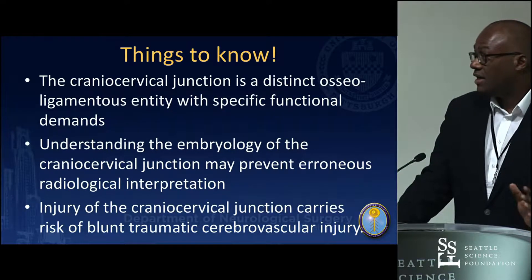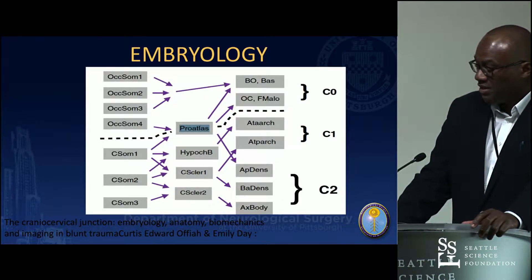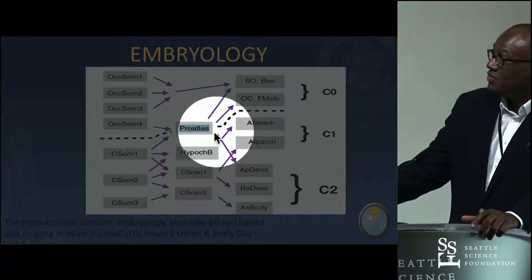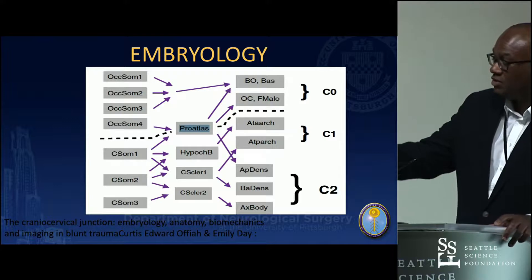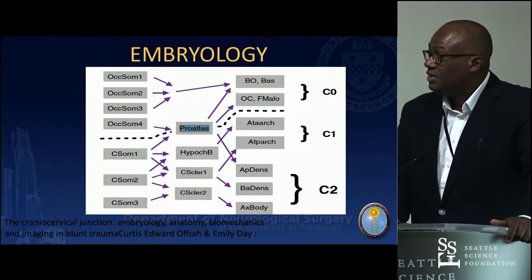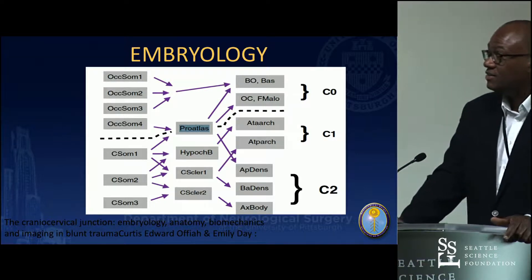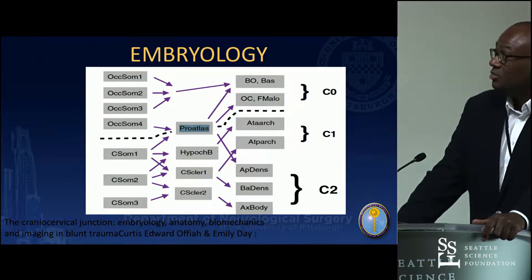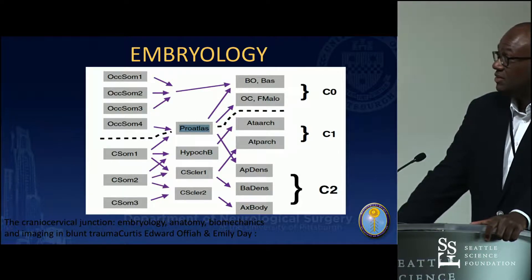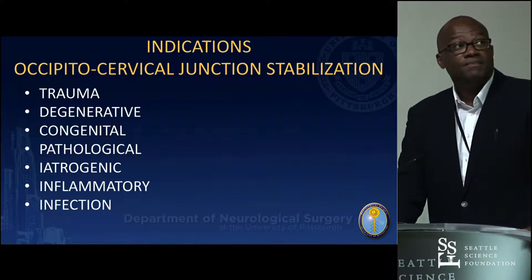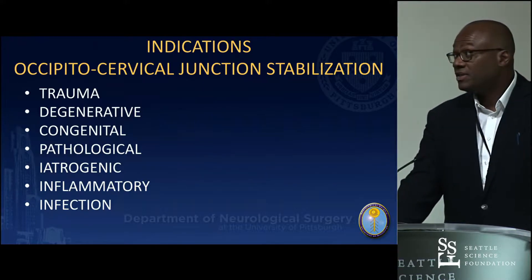Injury to the cranial cervical junction carries a risk of blunt trauma and cerebrovascular injury. Some of the embryology involves finding the dividing line between the cranial skull base and the cervical spine. Indications for stabilization include trauma, degenerative, congenital, pathologic, iatrogenic, inflammatory, and infection.